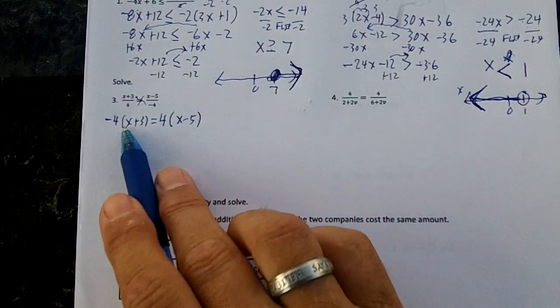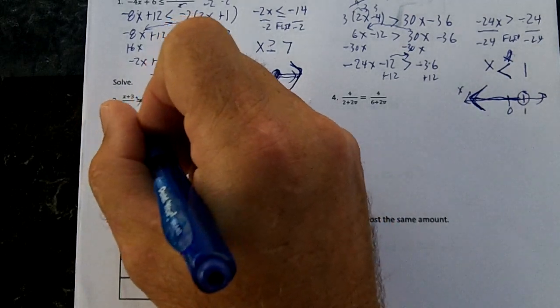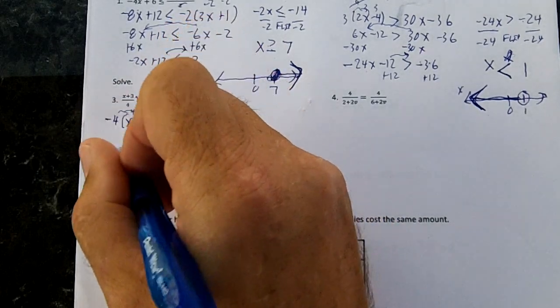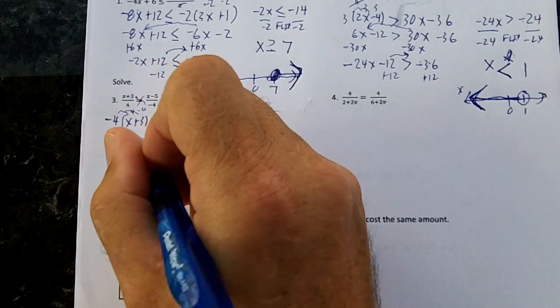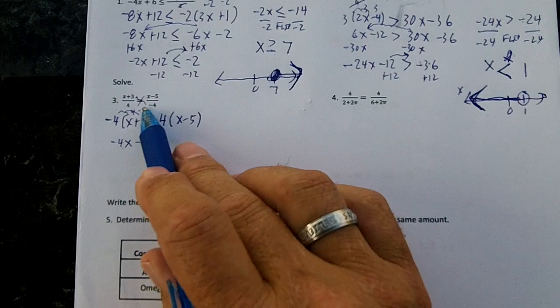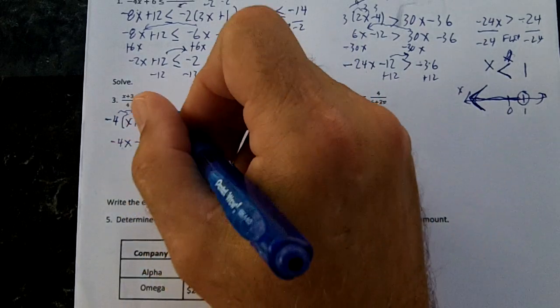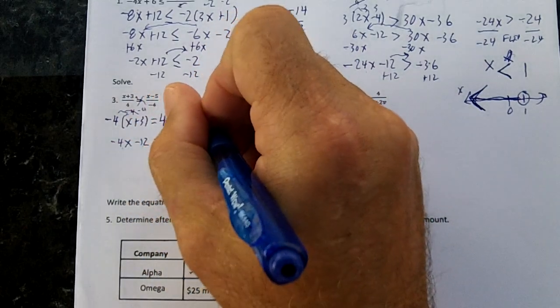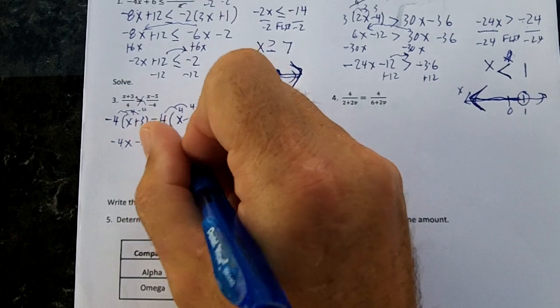And 4 times this number. I got the distributive property, so I'm going to distribute the negative 4, and I'm going to get negative 4x minus 12. Negative 4 times x is negative 4x. Negative 4 times 3 is negative 12. I'm going to distribute the 4, and I'm going to get 4x minus 20.